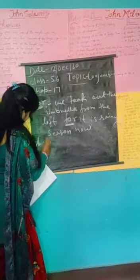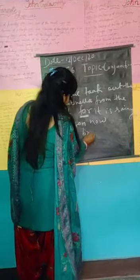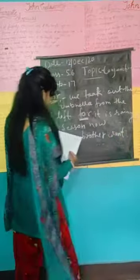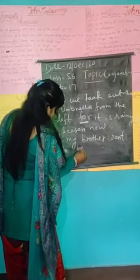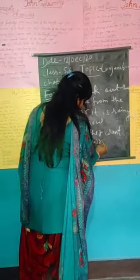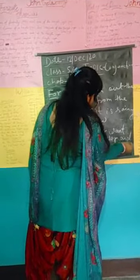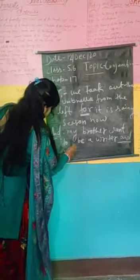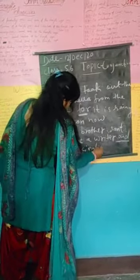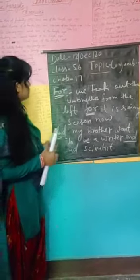And — our next conjunction. 'And' joins two words. Here is our words conjunction 'and.' My brother wants to be a writer and scientist. I hope you all understand the conjunctions 'for' and 'and.' So let's see the next conjunction.